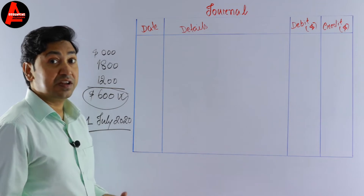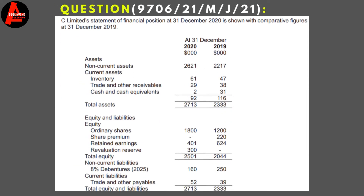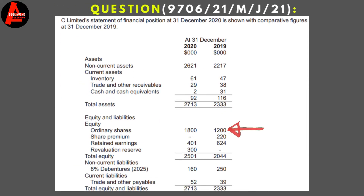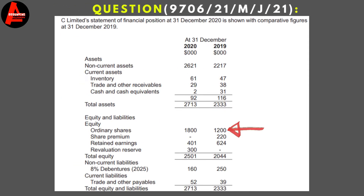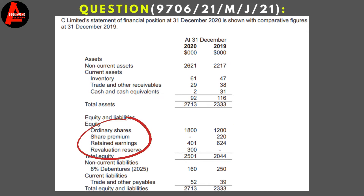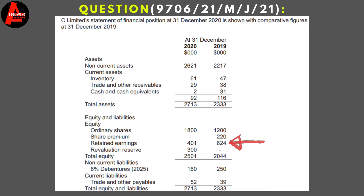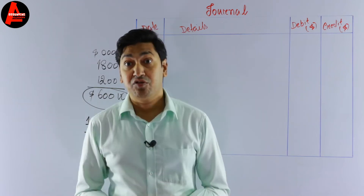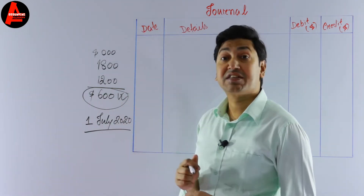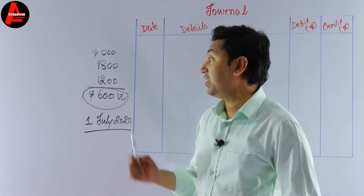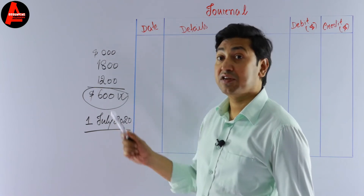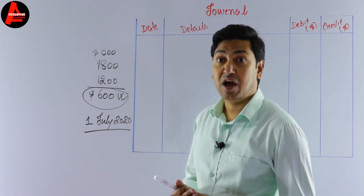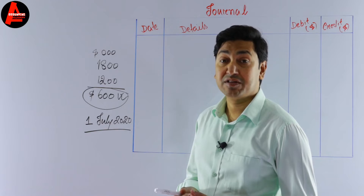So in 2019, ordinary share capital is 1,200,000 dollars. Share premium is 220,000 dollars and retained earnings is 624,000 dollars. The revaluation reserve only appears in 2020, so we will not consider it. The total bonus share amount is 600,000 dollars, and we need to take this 600,000 dollars from the 2019 fund figures — share premium and retained earnings.